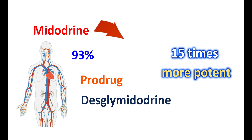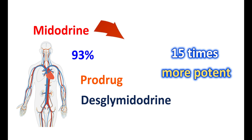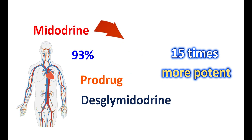The active metabolite is primarily responsible for the treatment of vasovagal syncope. Midodrine is rapidly absorbed, reaching peak plasma levels within half an hour, but it has a short half-life of around 25 minutes as it is converted into its active metabolite, whose half-life is around 3 to 4 hours. The absolute bioavailability of Midodrine is 93%, measured in terms of its active metabolite, and its absorption is not affected by food.